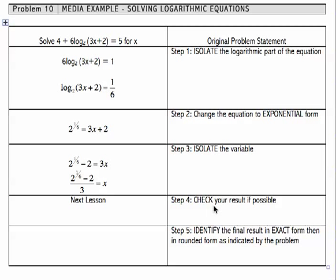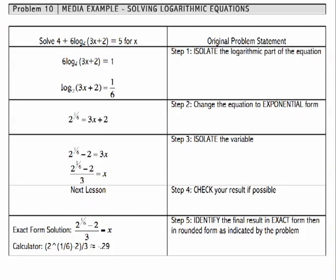Let's move to step 5, where we identify the final result in exact form and then rounded form. So first, exact form. For the exact form, I'm just going to replicate what I found in the last part of step 3. So my exact form is listed here.